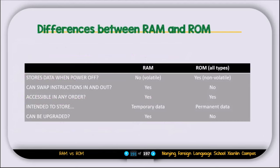So what are the differences between RAM and ROM? Here we have RAM and ROM, all types of ROM, and these are the criteria. Number one: stores data when power is off. RAM is volatile memory, so it cannot store data when power is off. ROM is non-volatile, which means it can store data even without electricity. Can swap instruction in and out? Yes, you can swap instructions in and out in RAM but not in ROM. Accessible in any order? Yes, you can access data from RAM and ROM in any order. Intended to store? RAM stores data temporarily, but ROM stores data permanently. Can be upgraded? Yes, you can upgrade RAM, but you cannot upgrade ROM.